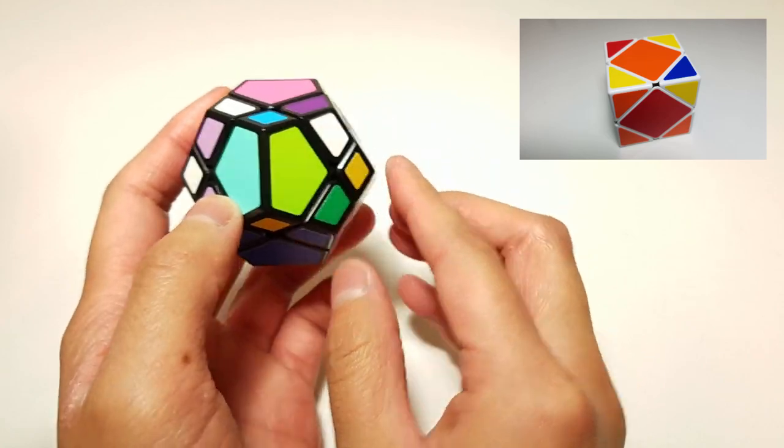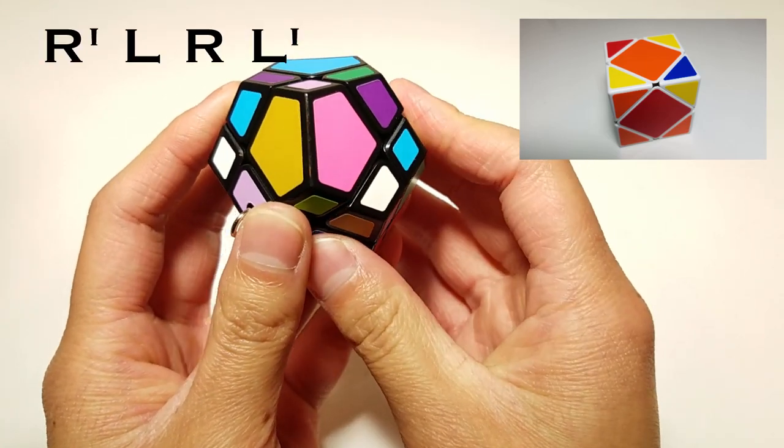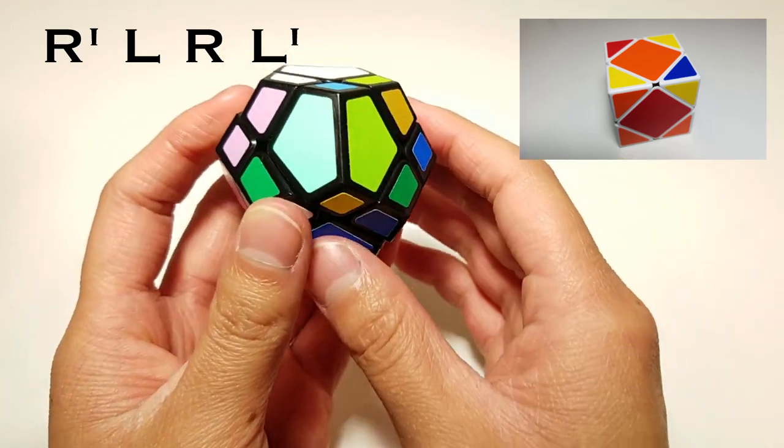And then here's where the algorithm comes in. I'll just have it right up here. Right, prime, or R prime, L, R, and then L prime.